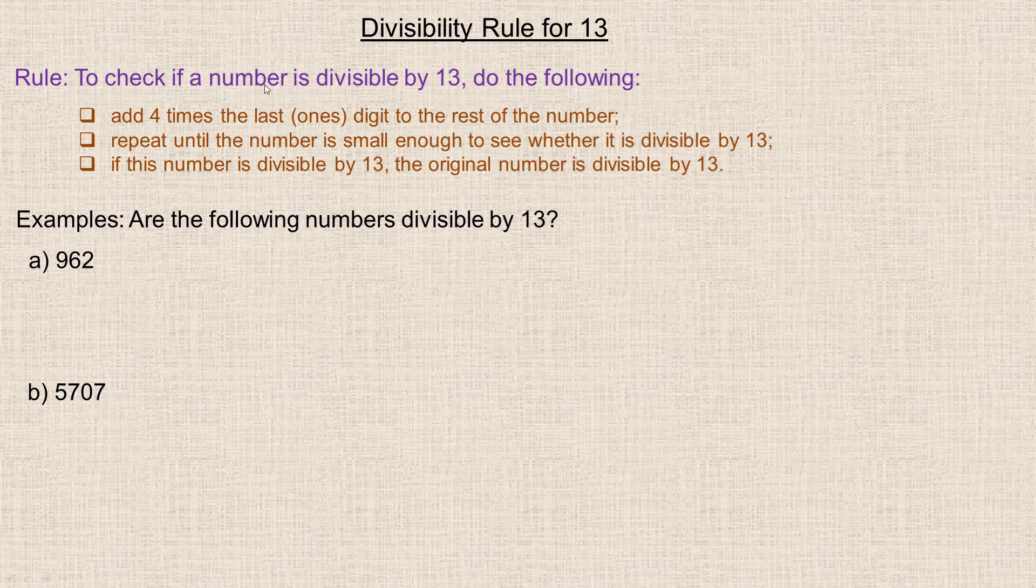To check if a number is divisible by 13, we do the following. We add four times the last digit, or the one in the ones place, to the rest of the number. And you repeat that until the number is small enough to recognize whether it's divisible by 13 or not. And if this number at the end, you often usually go down to a two-digit number, is divisible by 13, then the original number is divisible by 13.